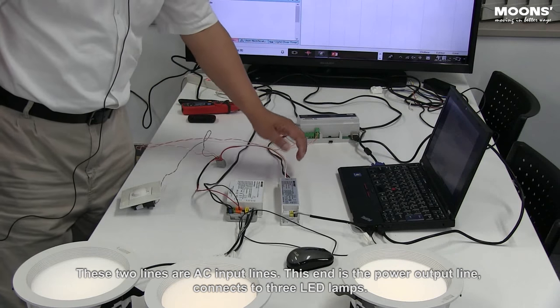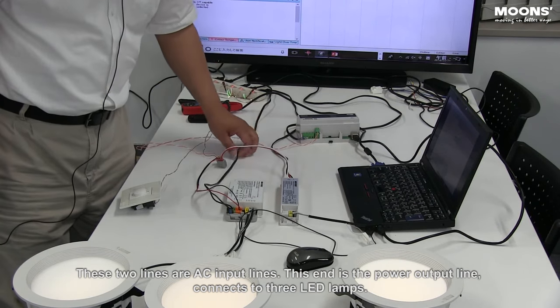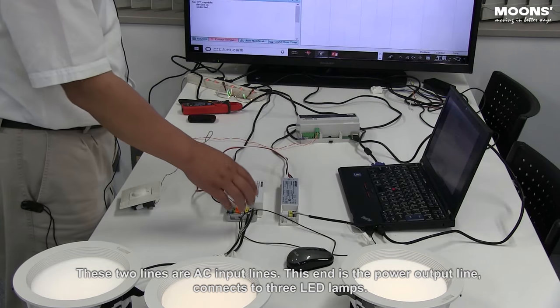These two lines are AC input lines. This end is the power output line, connects to three LED lamps.